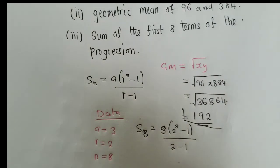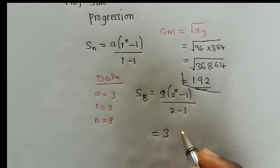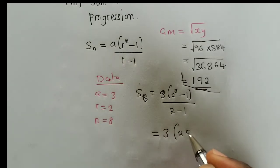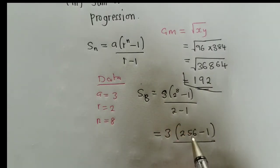So 2 there, minus 1. And when we work out here, we're going to have a 3. Here it's 256 minus 1 over a 1. 2 to the power of 8 is 256.